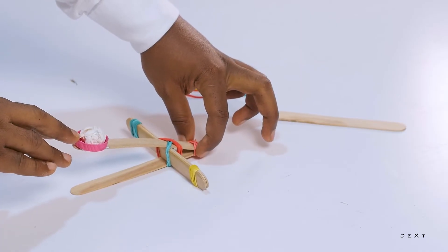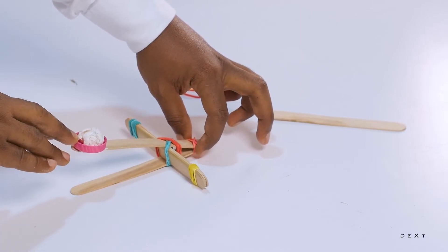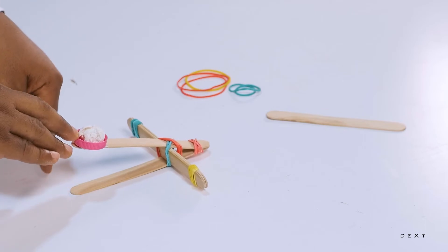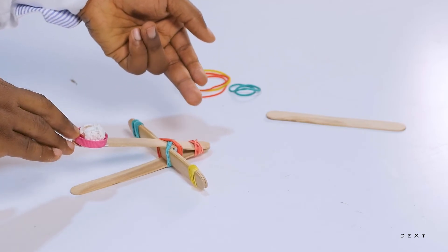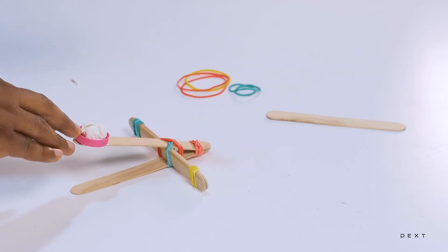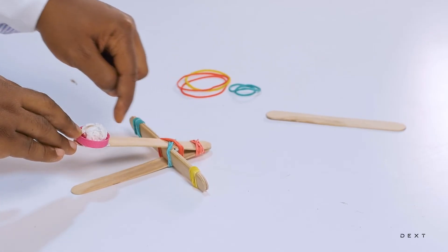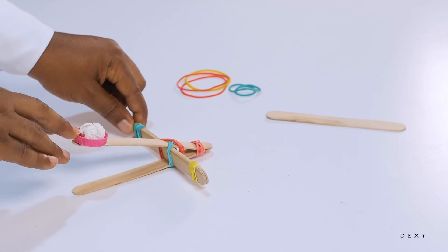One is the elastic band here. It is being slightly stretched. As we apply a force downwards here, this rubber band is stretched upwards. But, also, note that the piece of wood here is also storing some force.